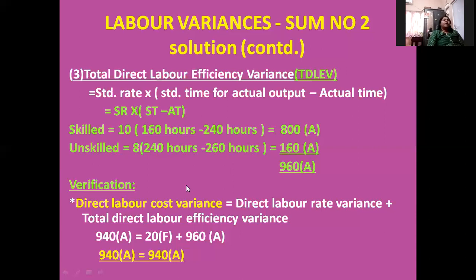For verification, labor cost variance equals the sum of rate variance and efficiency variance. We got cost variance as 940 adverse, labor rate variance as 20 favorable, and labor efficiency variance as 960 adverse. So 20 favorable minus 960 adverse equals 940 adverse on the right side — matching 940 adverse on the left. Both sides are equal, so our calculations are correct.